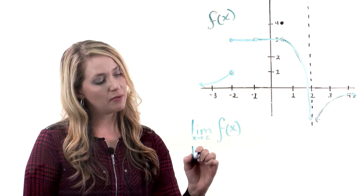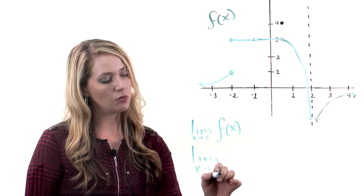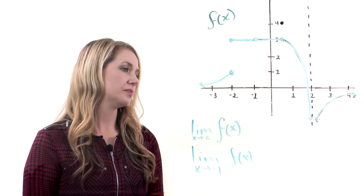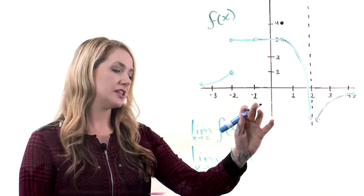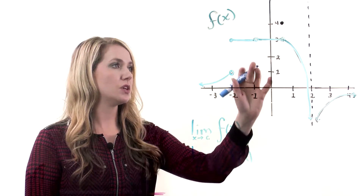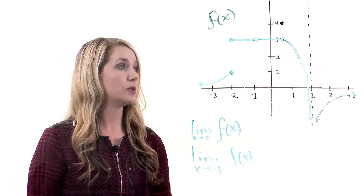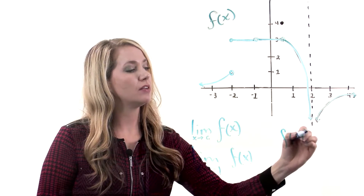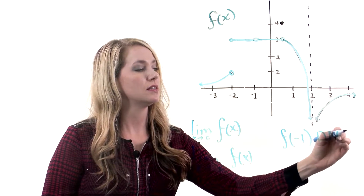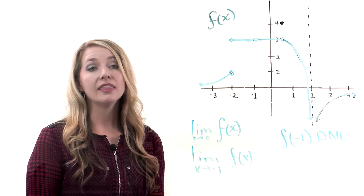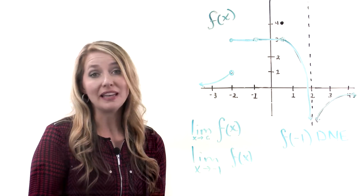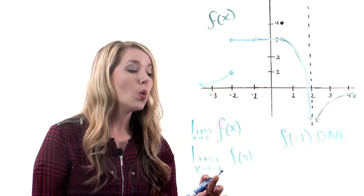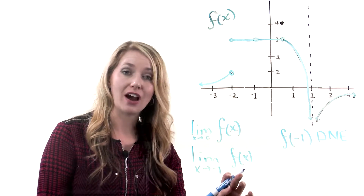For instance, I may want to find the limit as x approaches negative 1 of the function f of x. I have the function graphed in blue, and here's my x value of negative 1. Our first attempt might be to ask what the function looks like at negative 1. But if you'll notice, there's actually a hole in the graph at negative 1, so f of negative 1 does not exist — the function is undefined there. However, that does not impact whether the limit exists. The limit asks: as x gets close to negative 1, what is the y value getting close to?